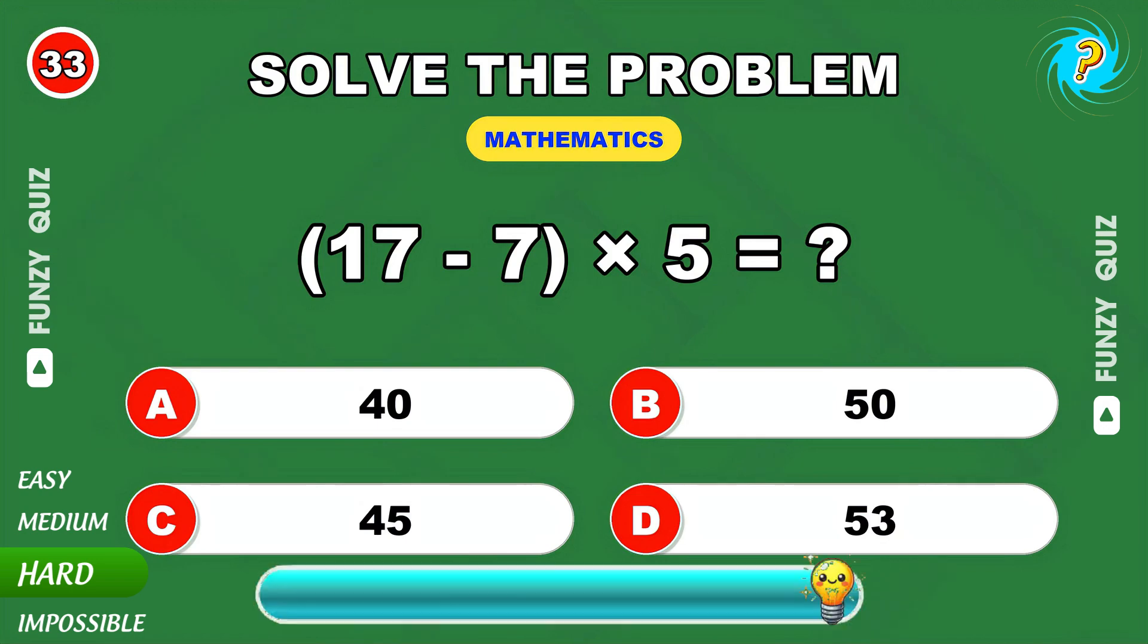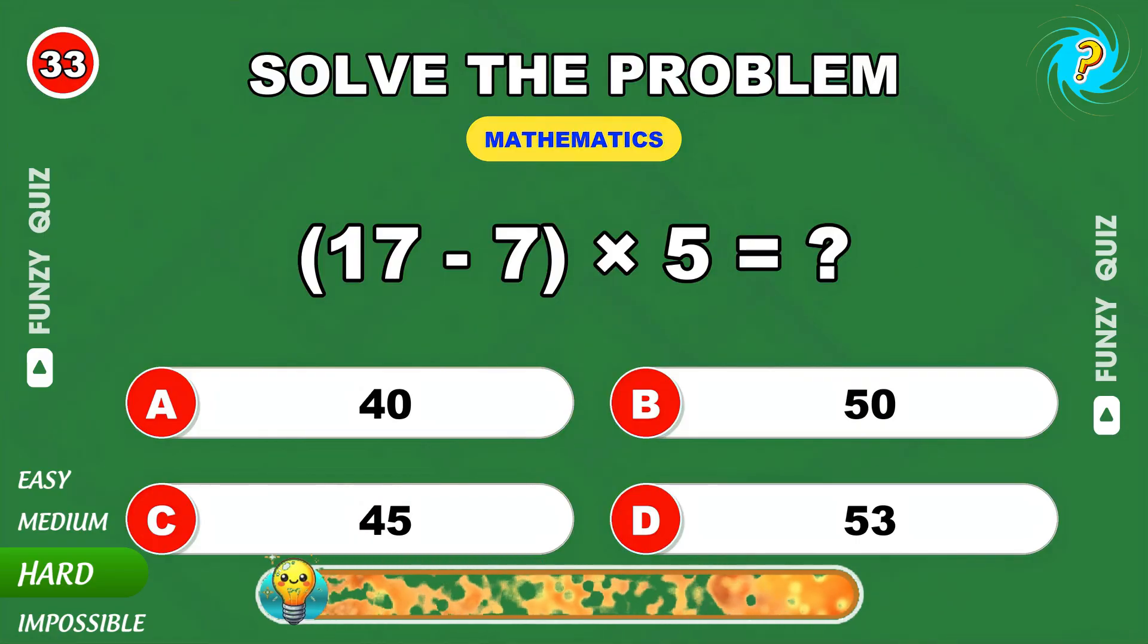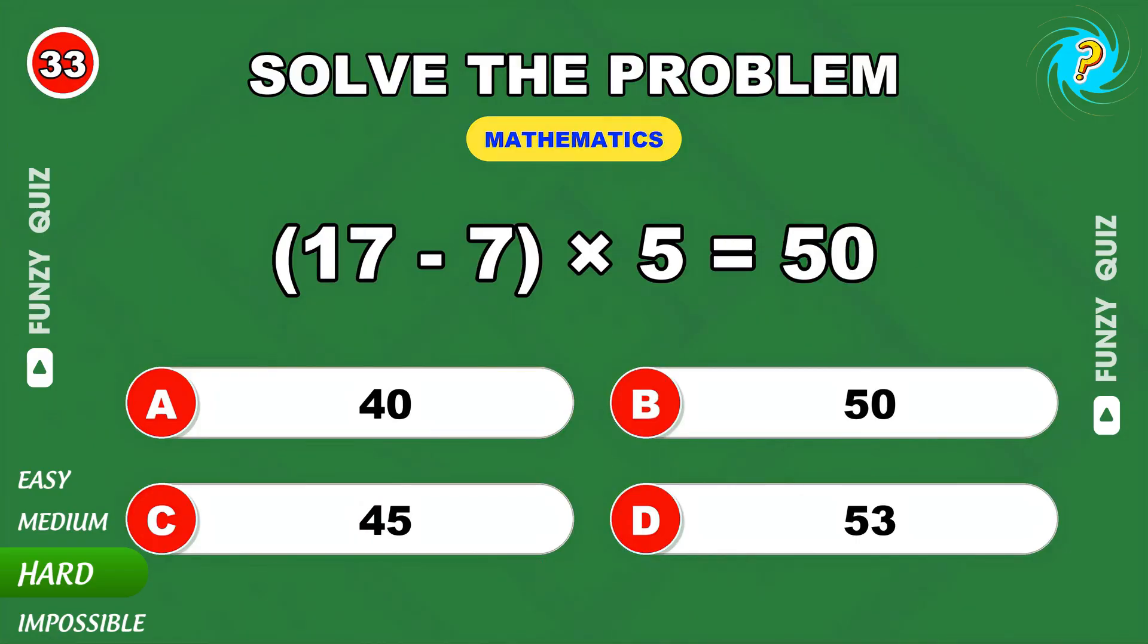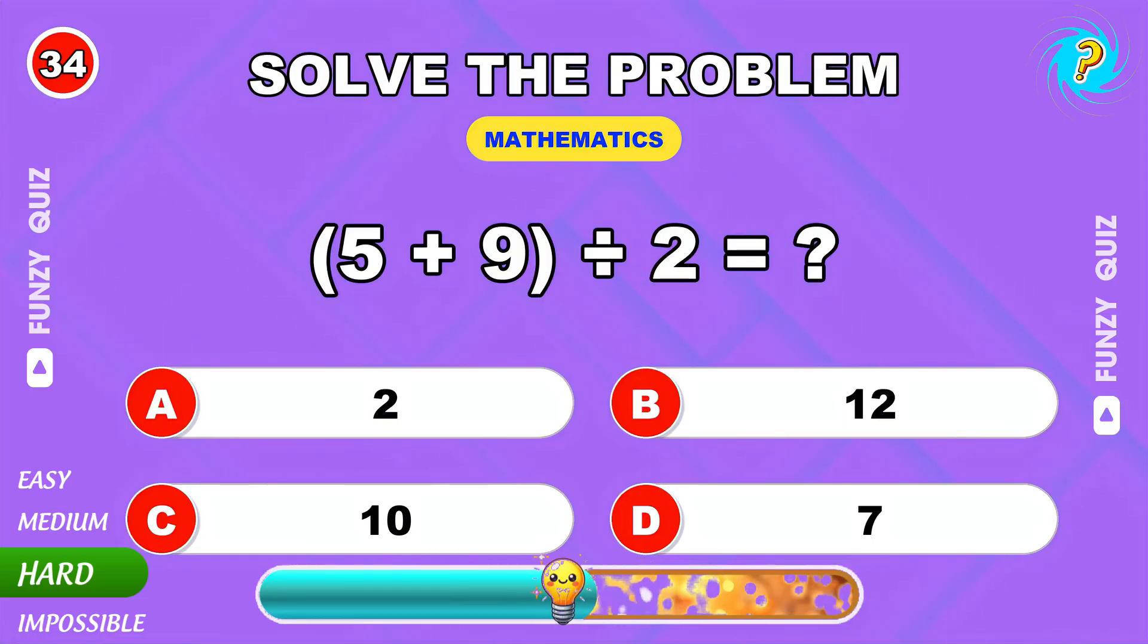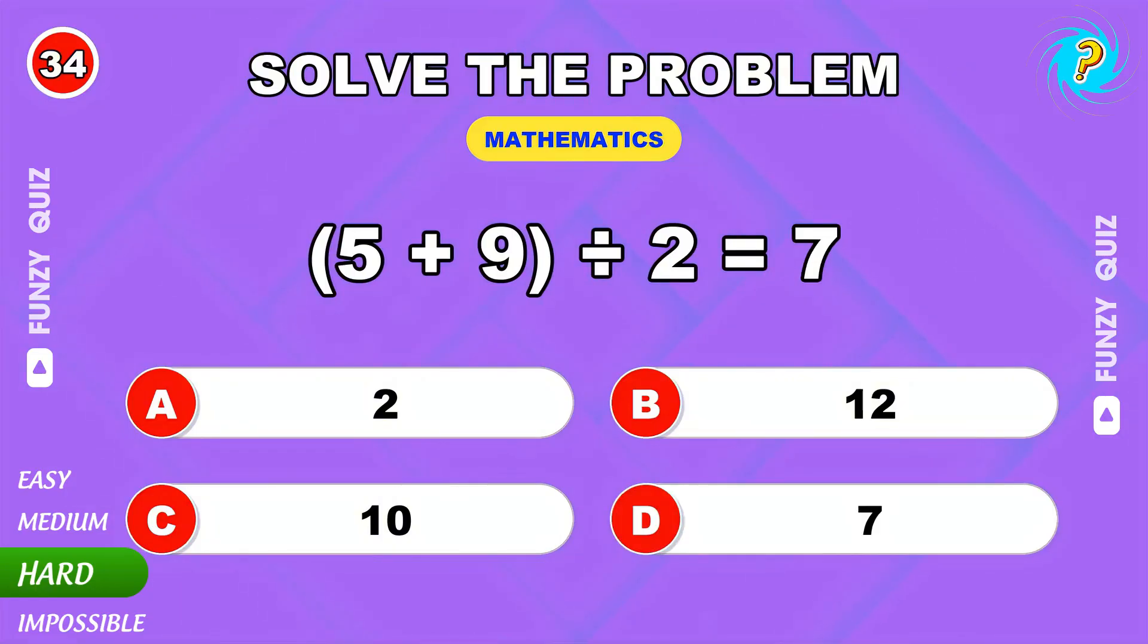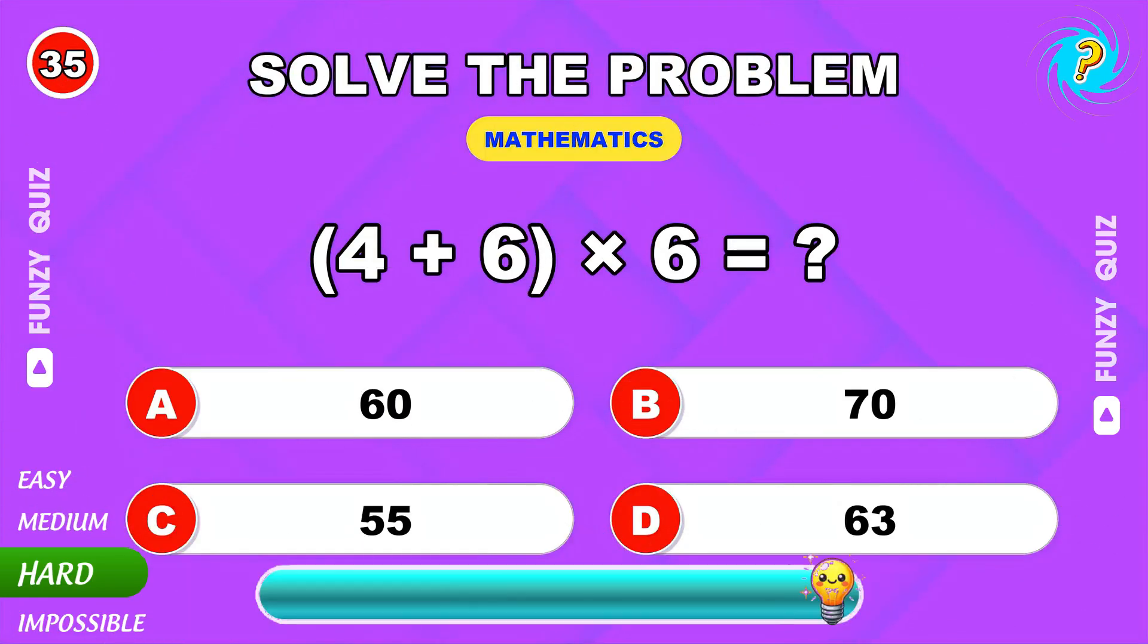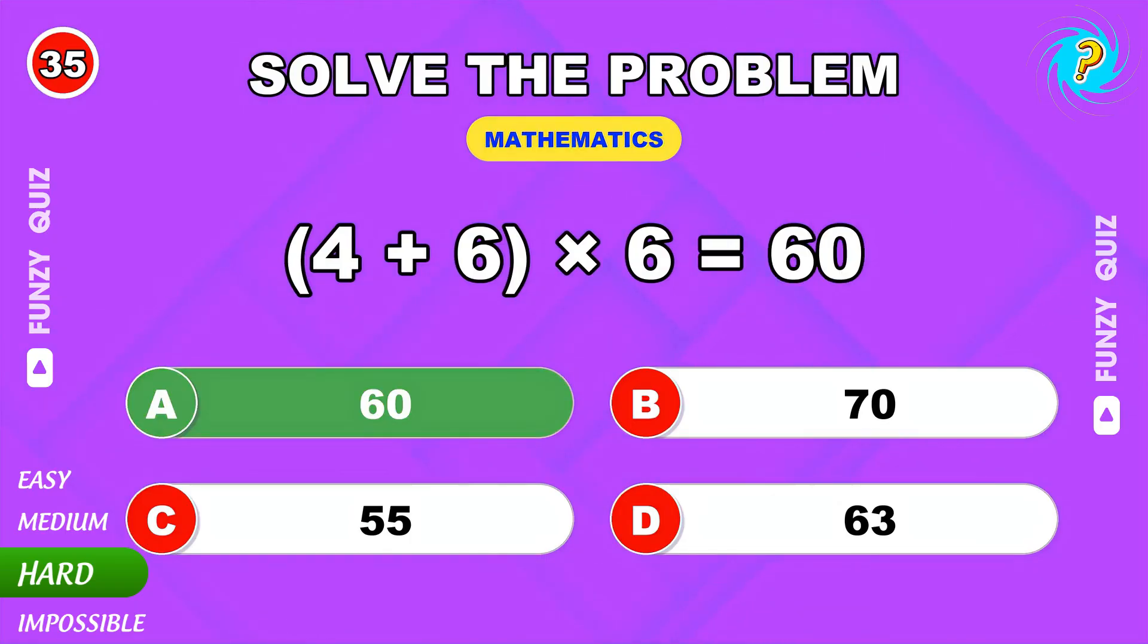15 minus 7 times 5. 50, impressive. 5 plus 9 divided by 2. 7. 4 plus 6 times 6. That equals 60.